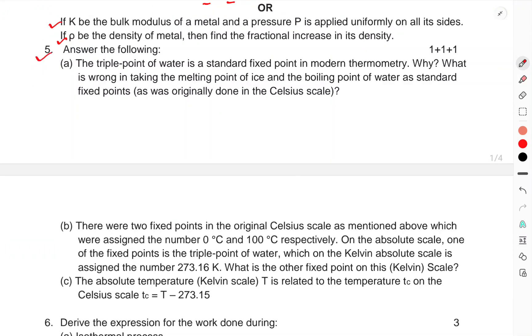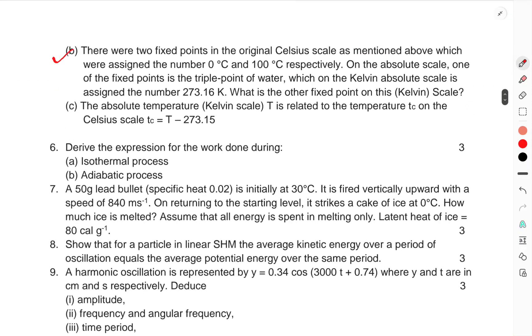Question 5. Answer the following: (a) The triple point is the standard fixed point in modern thermometry. Why is it wrong to take the melting point of ice and boiling point of water as standard fixed points? (b) There were two fixed points in the original Celsius scale, mentioned above, which were assigned 0°C and 100°C. On the absolute scale, one of the fixed points in the triple point of water, which on the Kelvin absolute scale is assigned the number 273.16 Kelvin. What is the other fixed point on this Kelvin scale?